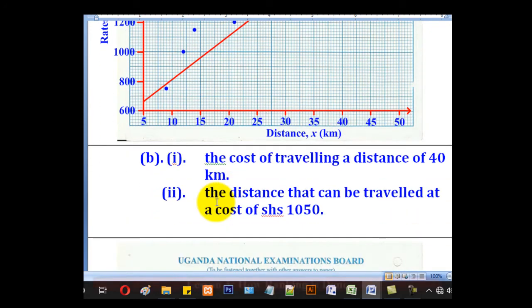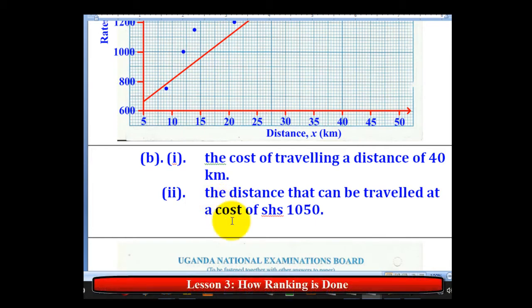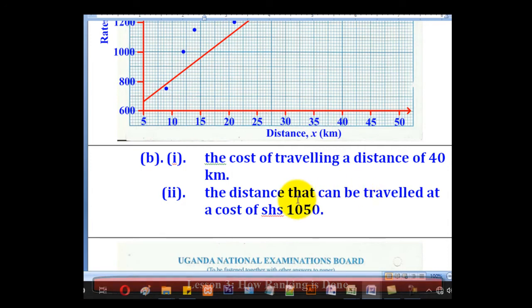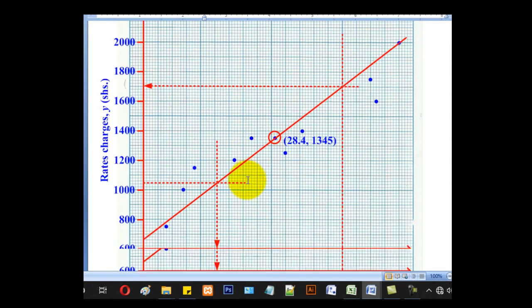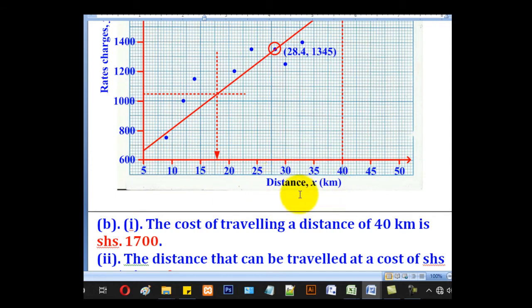Now after drawing that line of best fit, we were asked to use it to find Roman 1, the cost of travelling a distance of 40km and Roman 2, the distance that can be travelled at a cost of shillings 1,050. So we shall start with Roman 1, 40km. What is the cost? Remember the distance is on the horizontal axis.